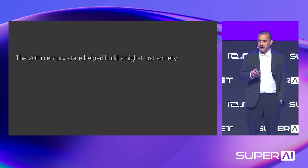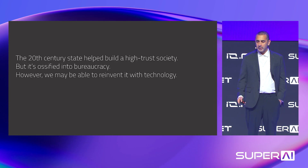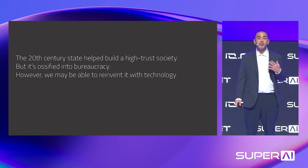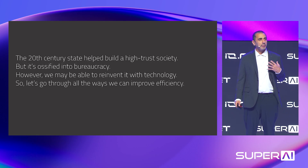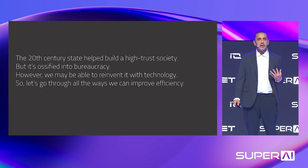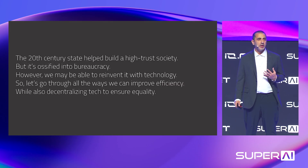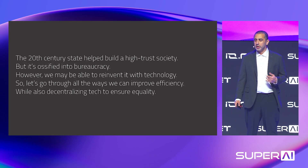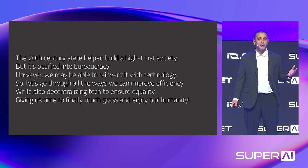The 20th century state helped build a high-trust society, but it's ossified into bureaucracy. However, we might be able to reinvent it with technology. I want to go through all the ways we can improve the efficiency of government, and also use decentralizing technology to ensure equality, giving us time to finally touch grass and enjoy our humanity.